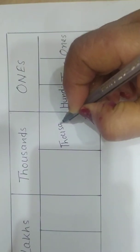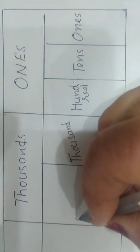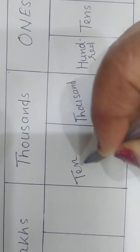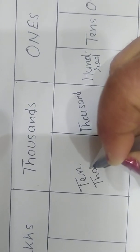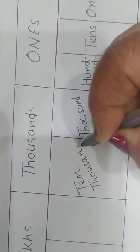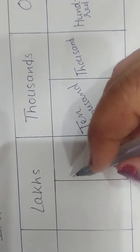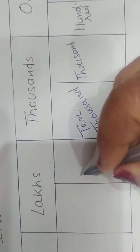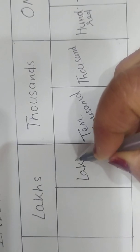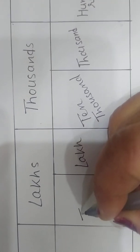Thousand period is divided into two places: thousands and ten thousand. Lakhs period is also divided into two places: lakhs and ten lakhs.